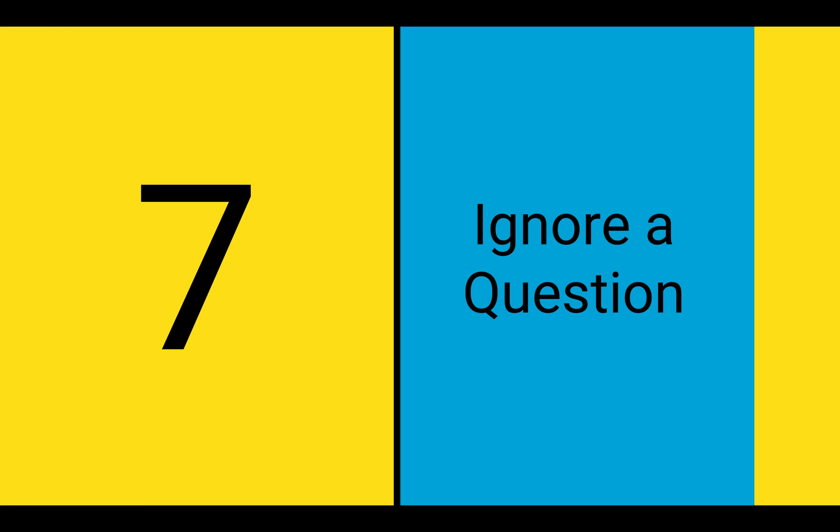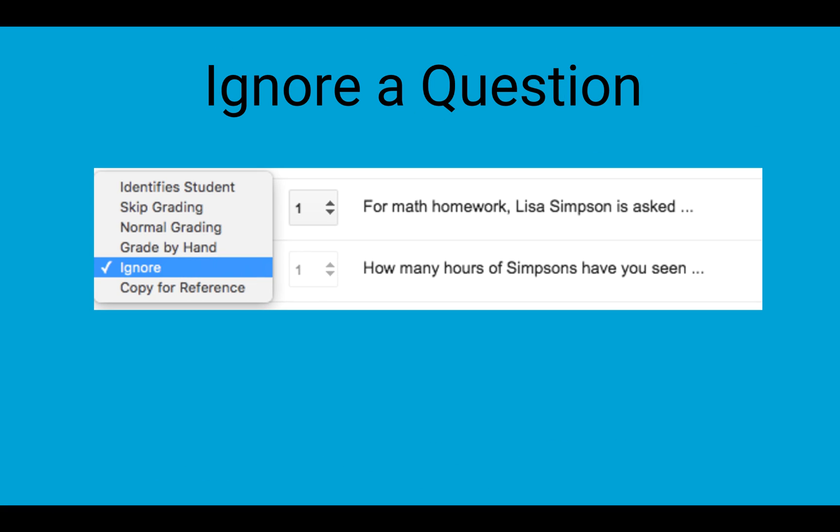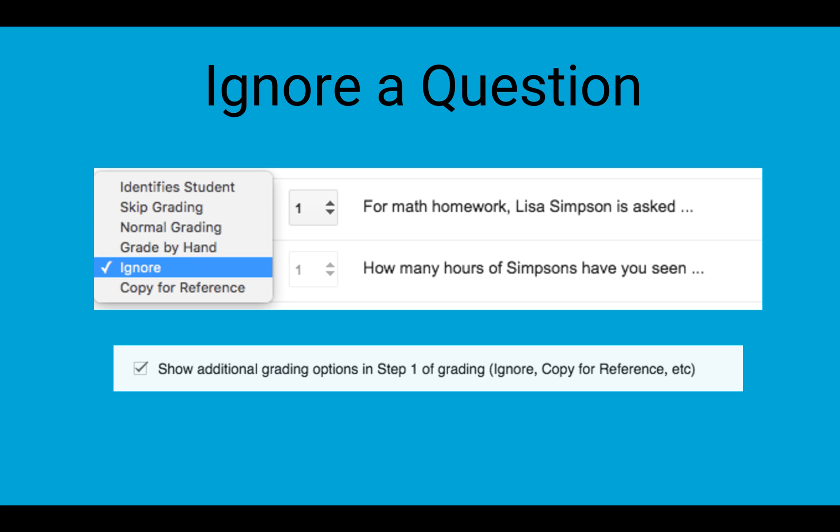Number 7. Ignore a Question. Fluberoo already gives you the ability to skip grading on a question, but the content of that question will still show up in the email sent to the student. Instead, you might want to ignore a question entirely, which means the student won't even know it existed in the graded assignment. To do that, go into the Advanced Options and check Show Additional Grading Options in Step 1 of Grading. Then you can choose Ignore the next time you grade.